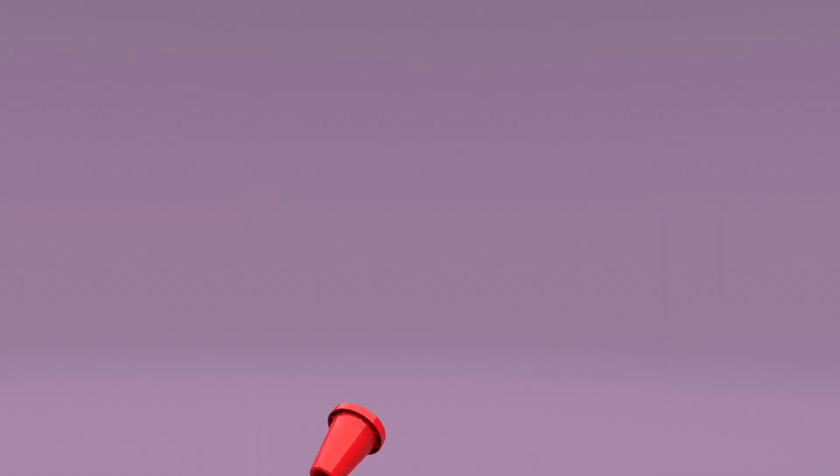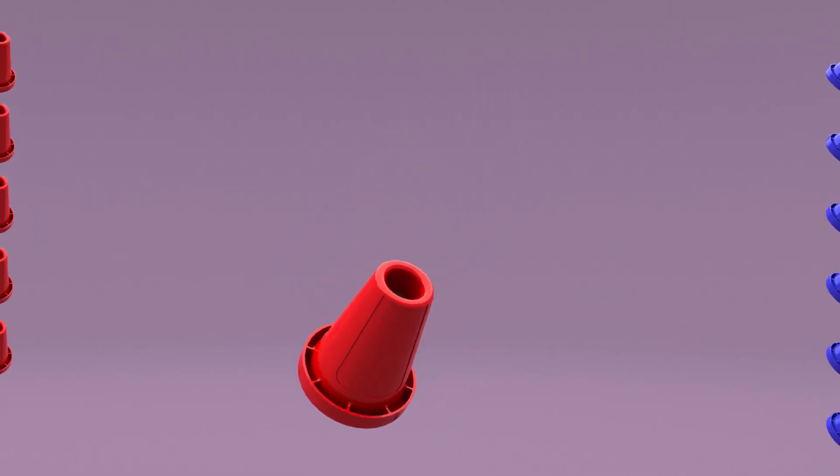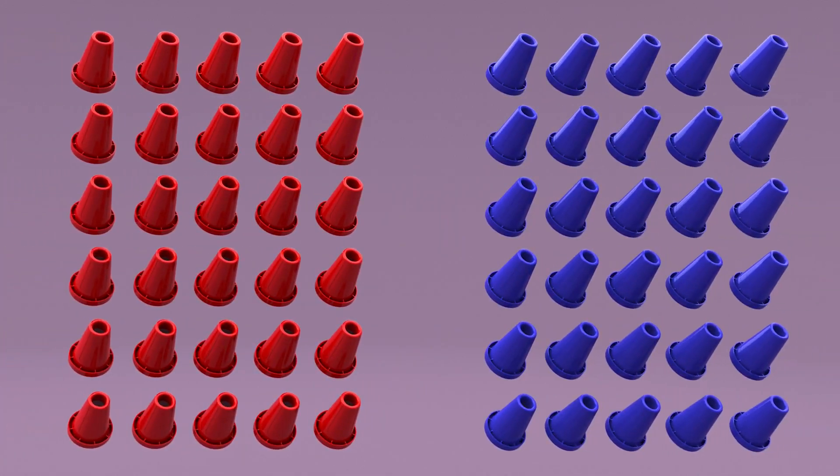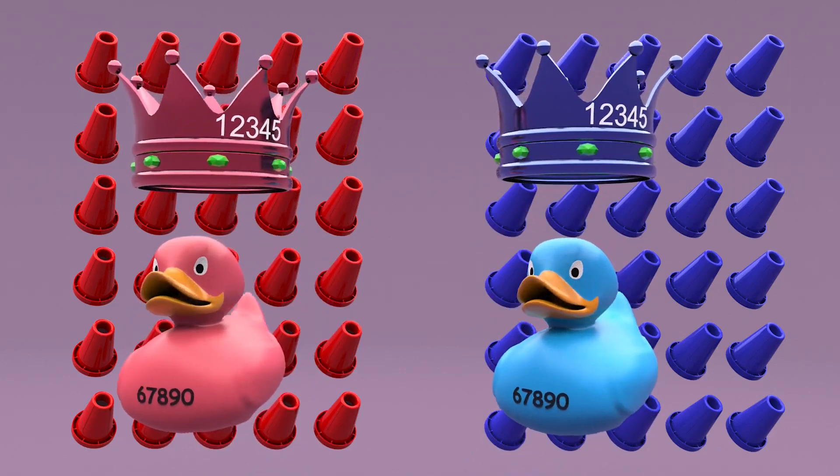The game element is a 4-inch diameter by 5-inch tall plastic cone. There are 60 cones, 30 red and 30 blue. Teams may also use their custom-designed beacons in gameplay.